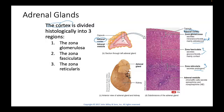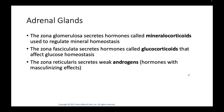Once we're past that, now you're in the inner portion, which is the adrenal medulla. The adrenal medulla secretes your norepinephrine and your epinephrine. So the zona glomerulosa secretes your mineralocorticoids — that's aldosterone, which regulates minerals. The zona fasciculata secretes glucocorticoids, primarily cortisol. And the zona reticularis secretes androgens, primarily testosterone.